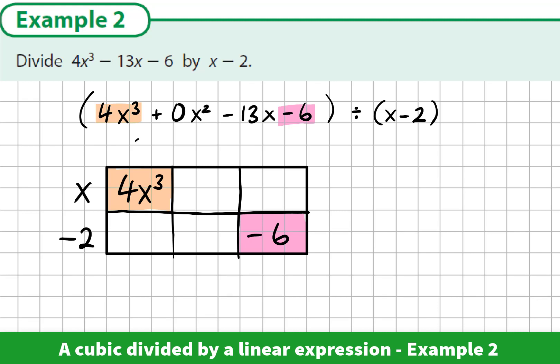Now we're ready to do some division. x multiplied by what would give me 4x cubed? That would be 4x squared. Negative 2 multiplied by what would give me negative 6? Negative 2 times 3 is negative 6.